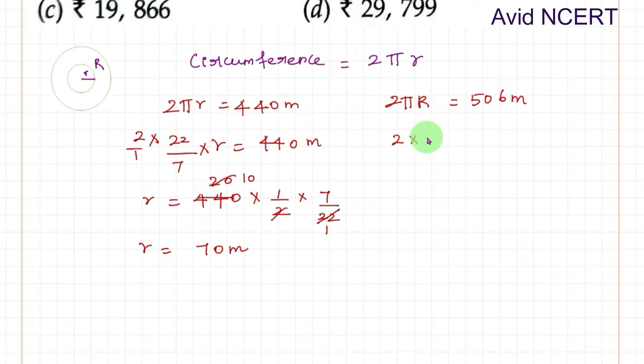To find the radius of the outer circle, same thing: 2 times 22 by 7 times uppercase R equals 506. To find uppercase R, equals 506 times 7 by 22 times 1 by 2. Simplifying this again, 23 times 7 which equals 161.